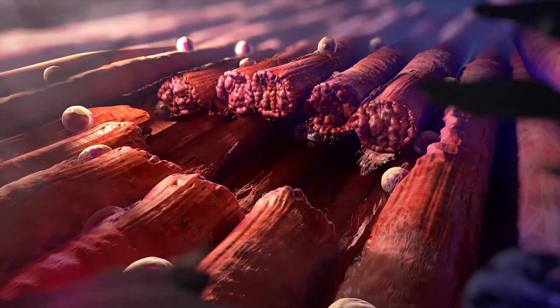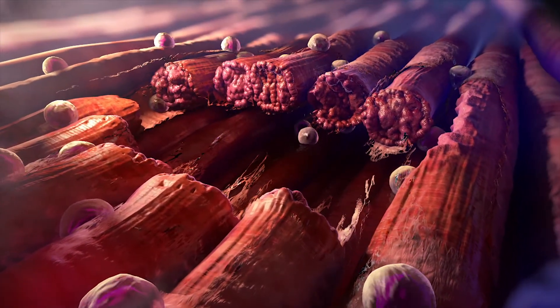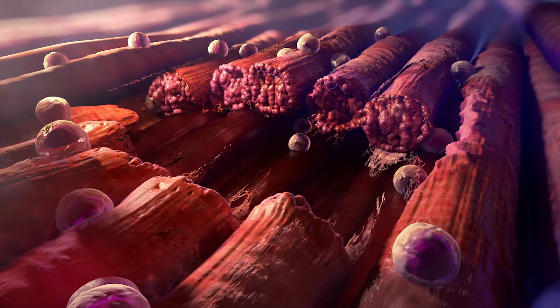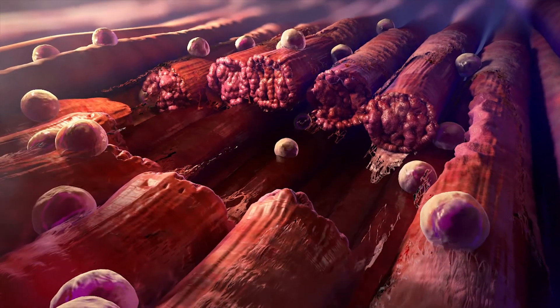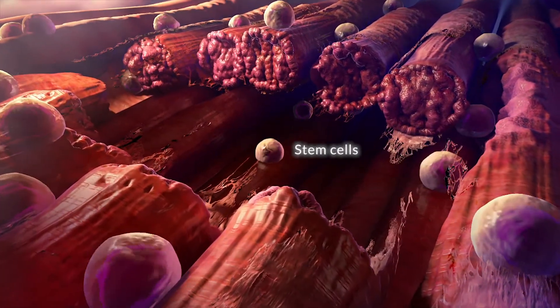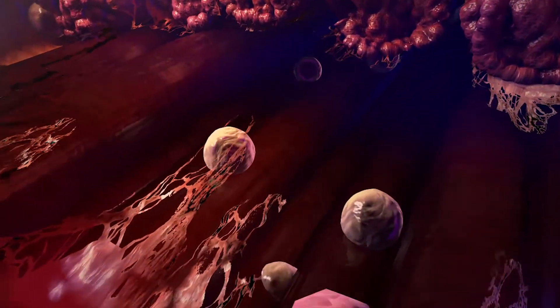In FOP, the process of heterotopic ossification begins with tissue destruction and inflammation, followed by the recruitment and accumulation of stem cells within affected tissue.